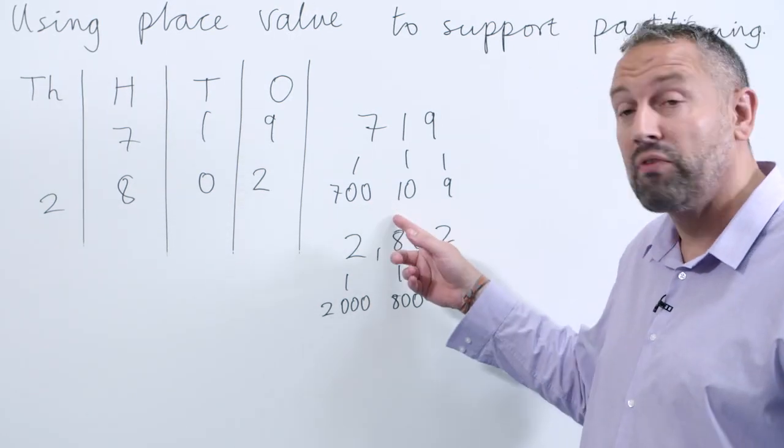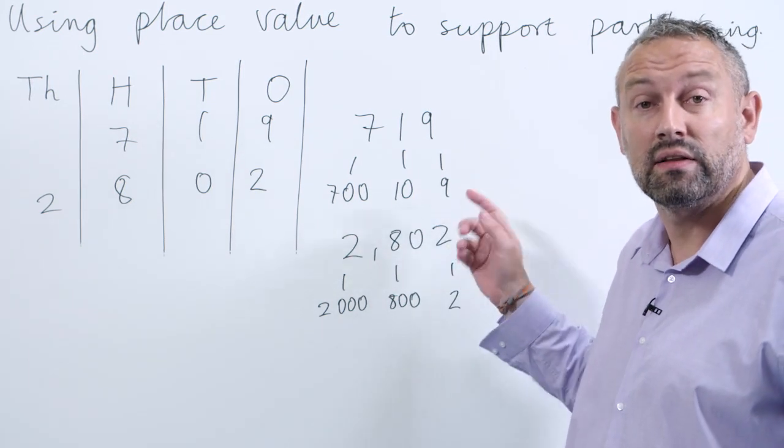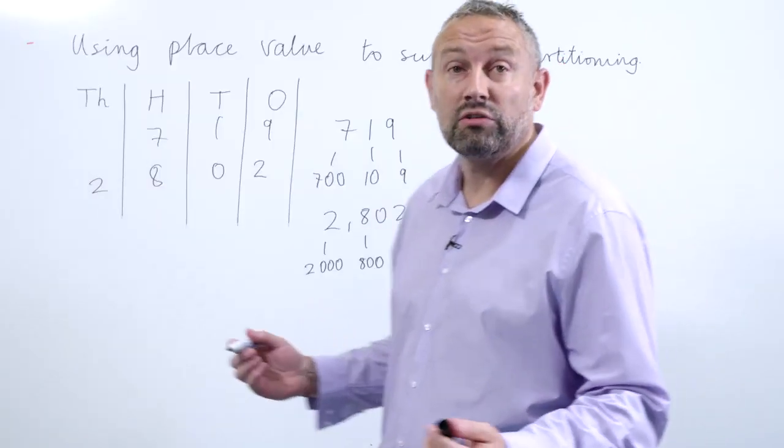The zero of course has no value and the children can see that. It's really important that the children see the value of each digit so they don't write down seven and one and nine. This also helps them when they come to addition. Let's look at this question.